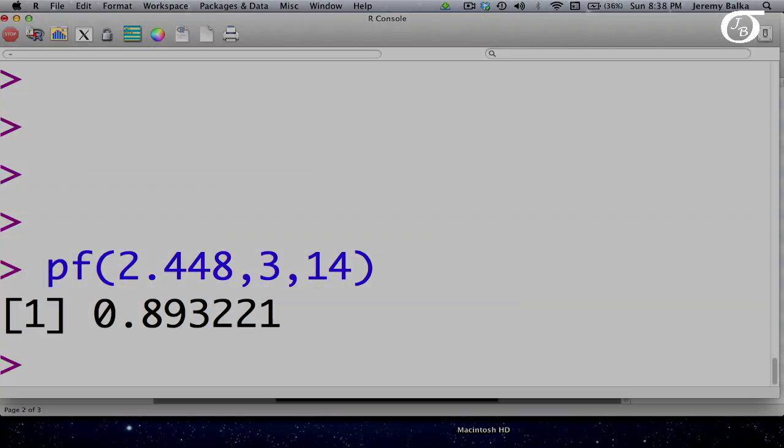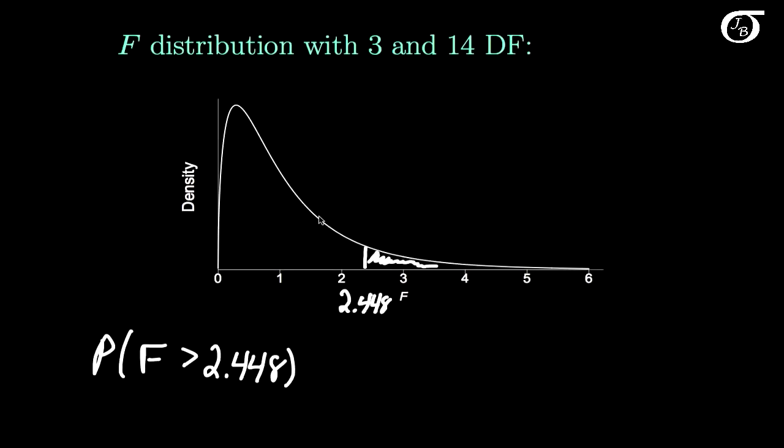And there we go. That command gave me the area to the left. So in other words, this area here to 3 decimal places is 0.893.